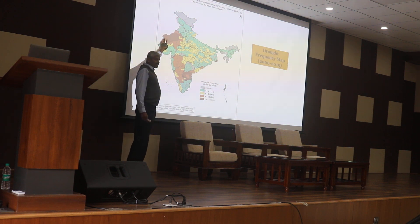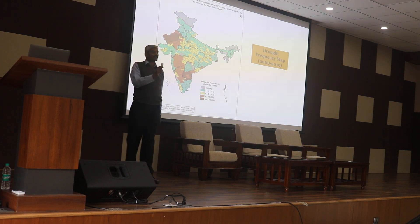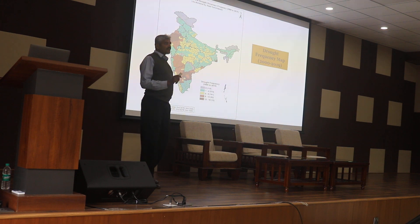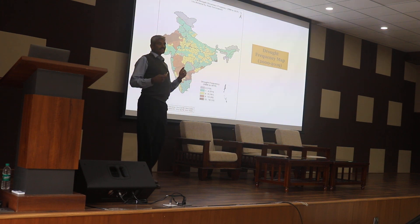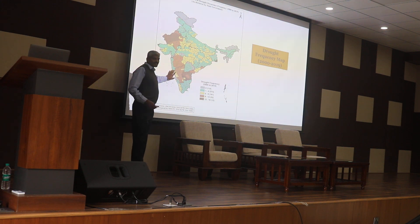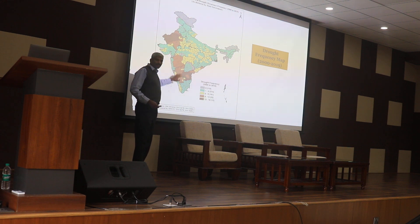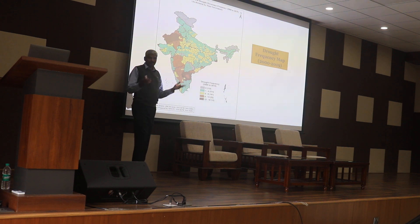Rajasthan receives less than 500 mm of rainfall, making them more resilient — they know they will receive less rainfall. For Karnataka, as mentioned yesterday, even though we receive more than 5,000 mm of rainfall in some areas, the state still falls into drought conditions due to improper management of water resources.